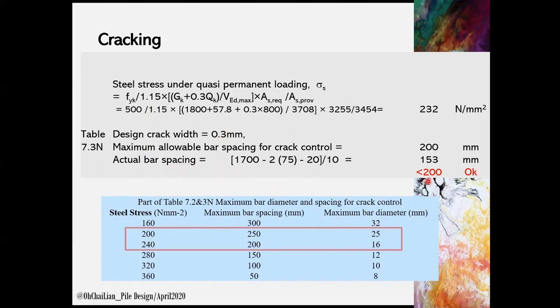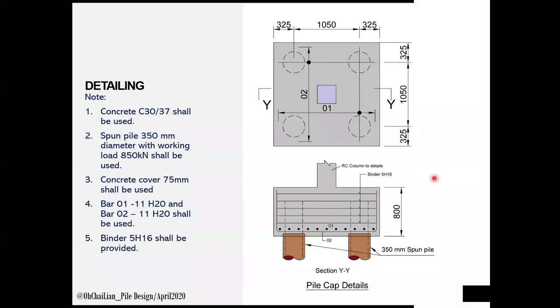This is the detailing for the pile cap design. Aside from bar 11 H20 at 0.1 and 0.2, this design also provides 5 H16, which is 25% from the AS required in the main reinforcement design as binder.